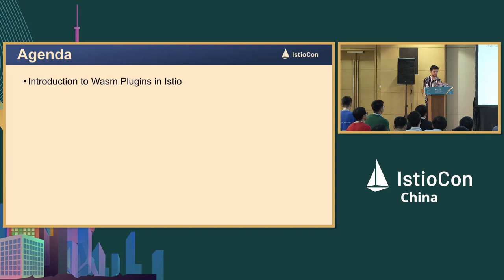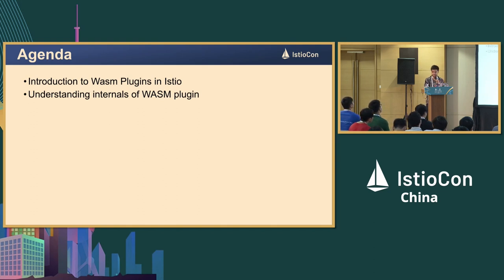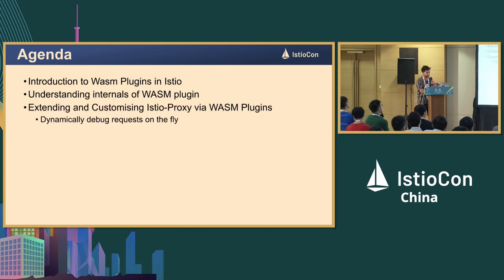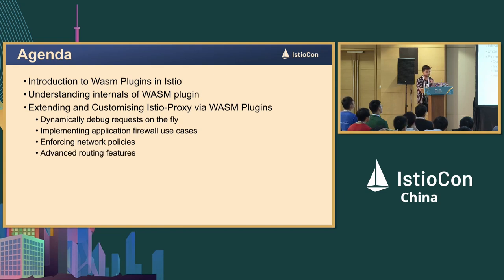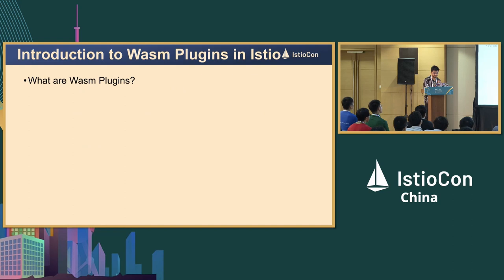We'll have a basic introduction of how Wasm plugins work in Istio, and then we'll see the internals of Wasm plugins and how they interact with Envoy. This is required so that we can create advanced use cases like dynamically debugging requests on the fly, implementing application firewall use cases in Envoy using Istio, enforcing network policies, and some advanced routing features using Wasm plugins. We'll also have a short demo.